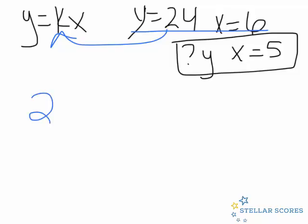So y equals 24, and we're going to substitute 6 in for x. Let's divide each side by 6, so k equals 24 divided by 6, or 4.